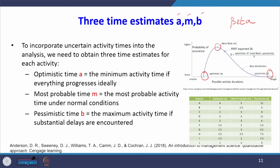The mean of this beta distribution is: optimistic time plus 4 times most likely time plus pessimistic time, divided by 6. This is the mean formula for beta distribution. If the project completion time followed uniform distribution, mean would be (a + b) / 2. Since we assume these three time estimates follow beta distribution, the formula for mean is (A + 4M + B) / 6.